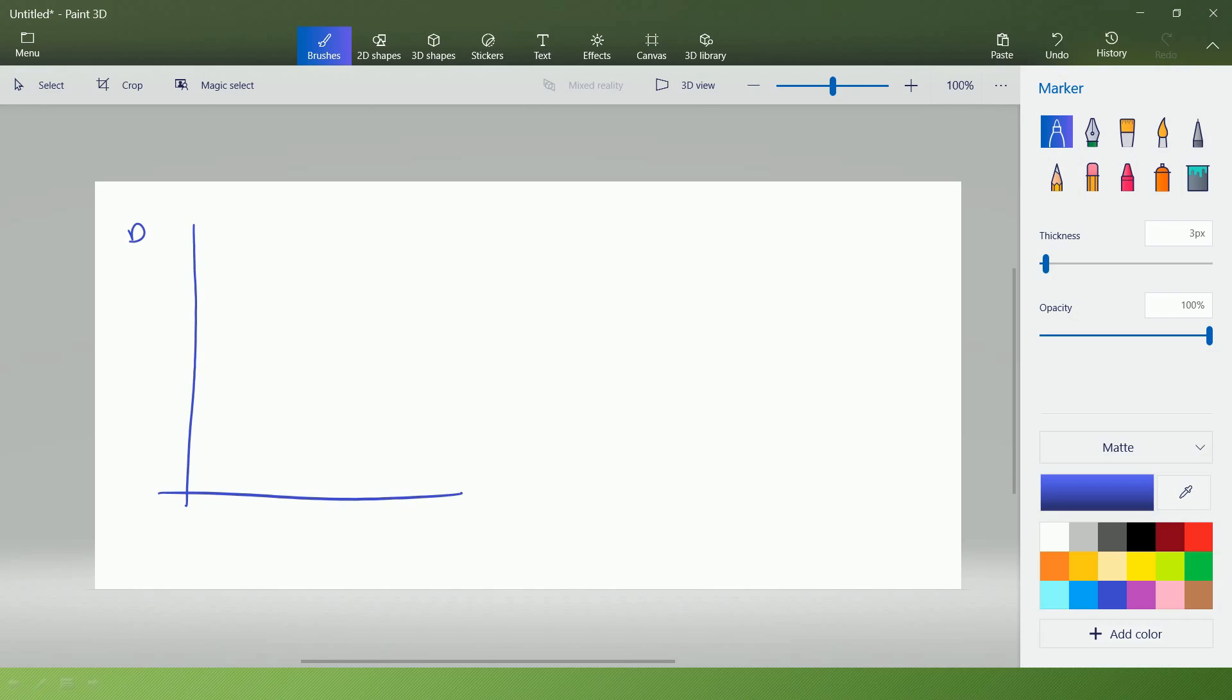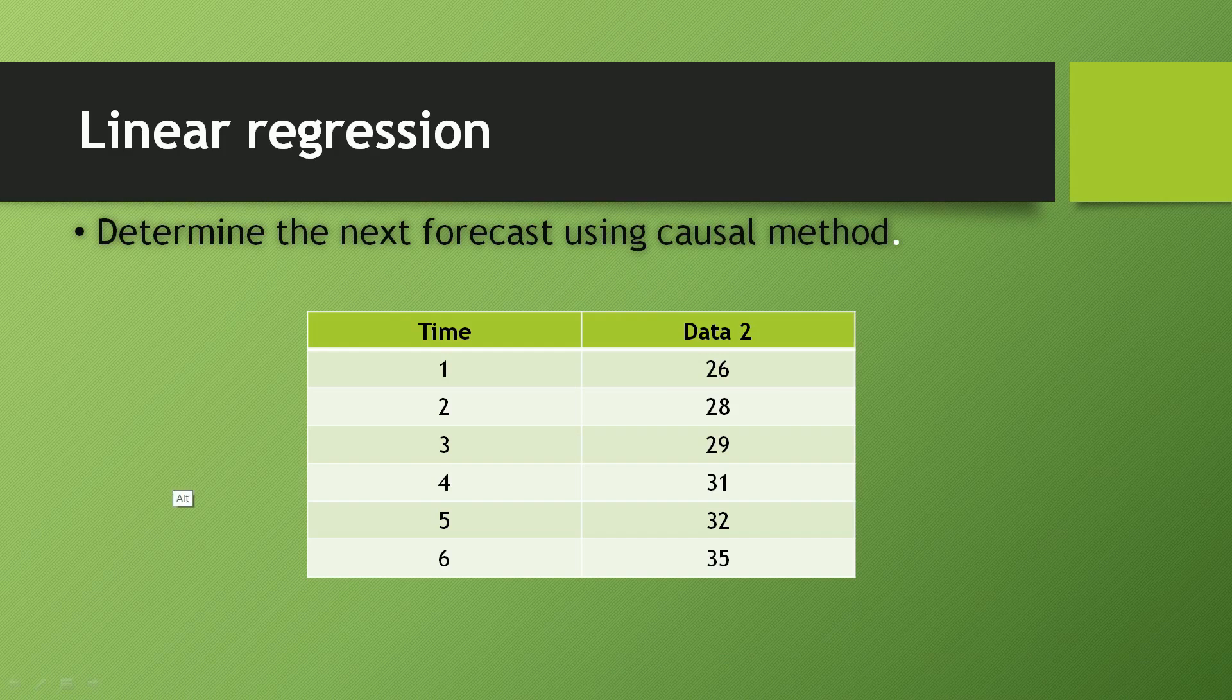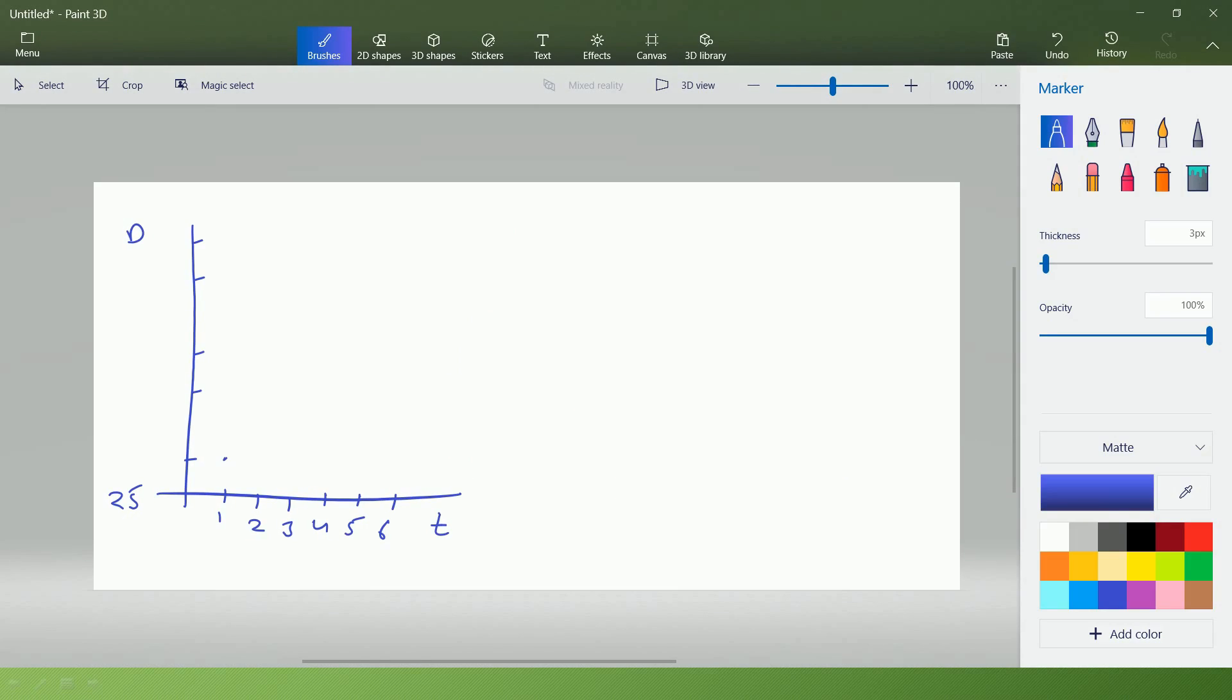Considering demand on the y axis and time on the x axis, this is time 1, time 2, time 3, time 4, 5 and 6. And taking this as a baseline of 25, I will have 26 here, then I have 28, 29, 31. So now you can see I can draw a line along these points. So this point is this, this point is this, this is this.